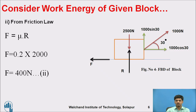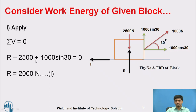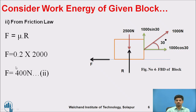Second step: use the friction law. By considering friction law, F = μ × R. Calculate the frictional force using the reaction already calculated and the coefficient of friction given in the problem statement. F = 0.2 × 2000. The value of the frictional force is 400 Newton — equation number 2.